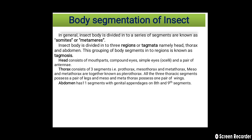The head consists of mouth parts, compound eyes, simple eyes (ocelli), and a pair of antennae. The thorax consists of three segments: the prothorax, mesothorax, and metathorax. The mesothorax and metathorax are together known as pterothorax. All three thoracic segments possess a pair of legs, and the meso- and metathorax each possess one pair of wings. The abdomen has 11 segments with genital appendages on segments eight and nine.